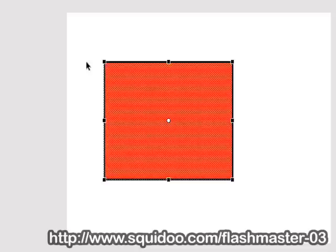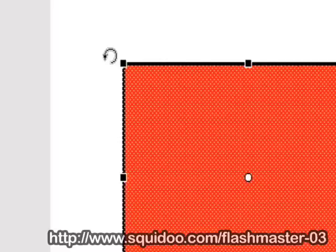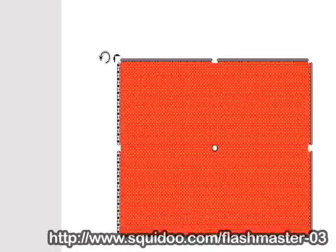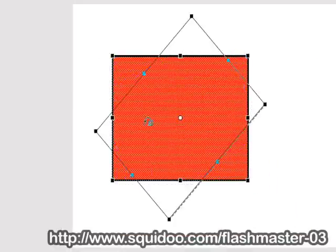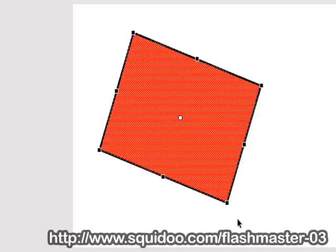There are a couple more things we can do with the free transformation tool. For instance, if we come over here, you'll notice that a new icon appears—it's kind of like a half circle with an arrow pointing downward. This simply means that we can rotate at this focal point. If we click, hold, and drag this, we can rotate it any way we want.